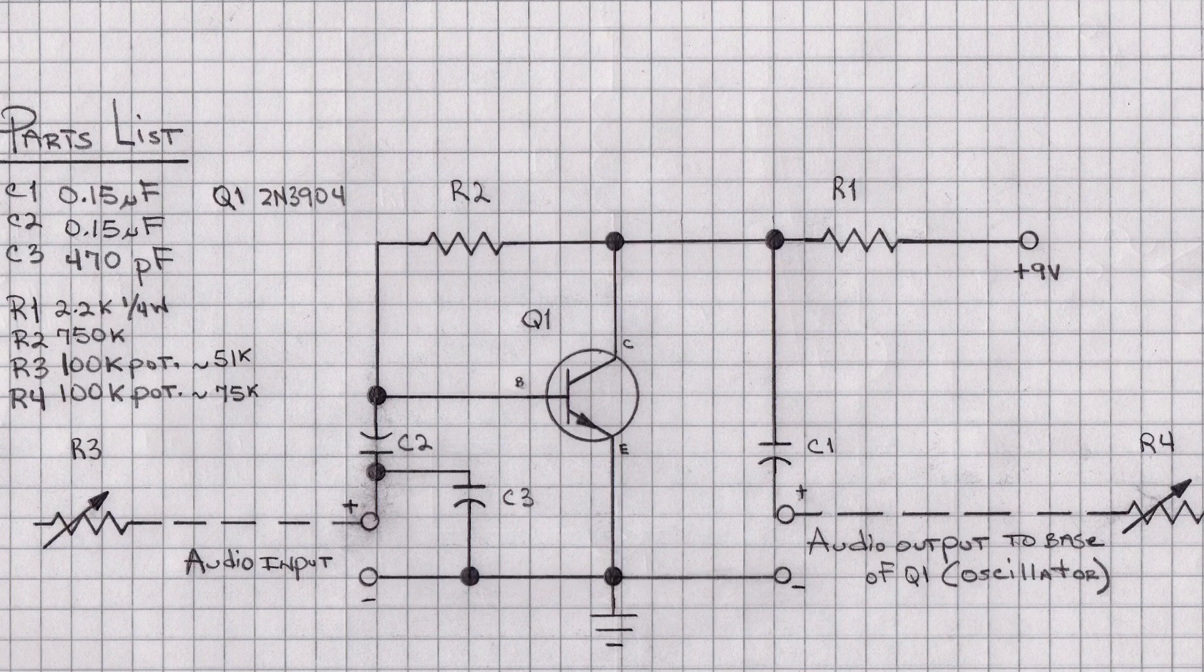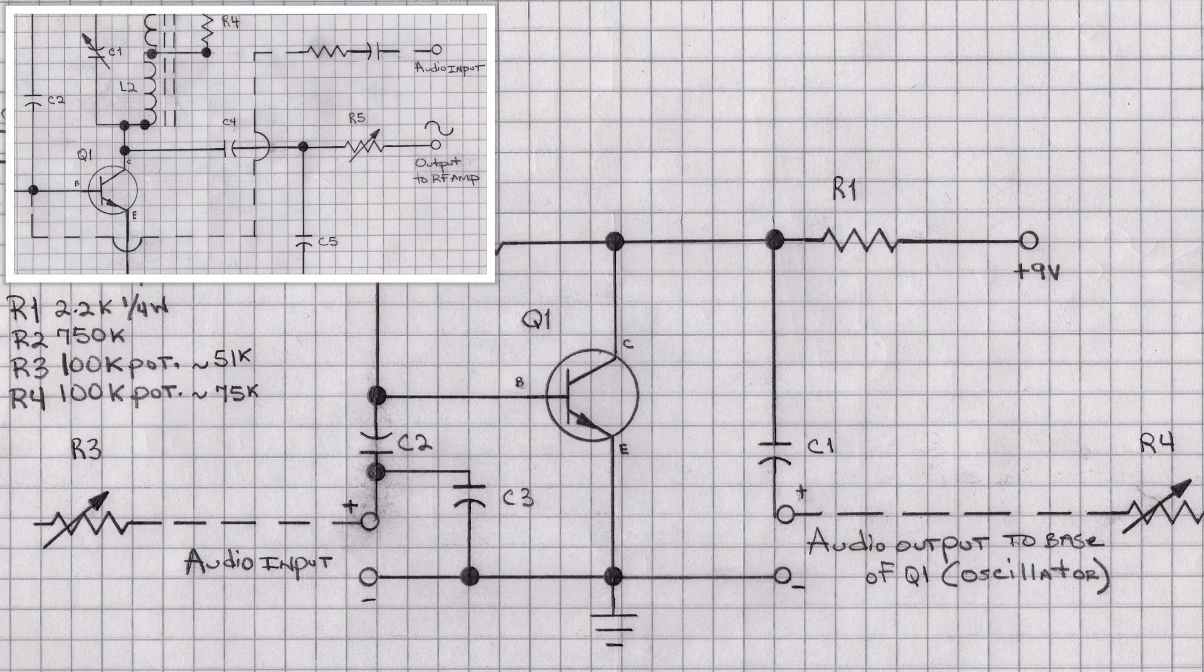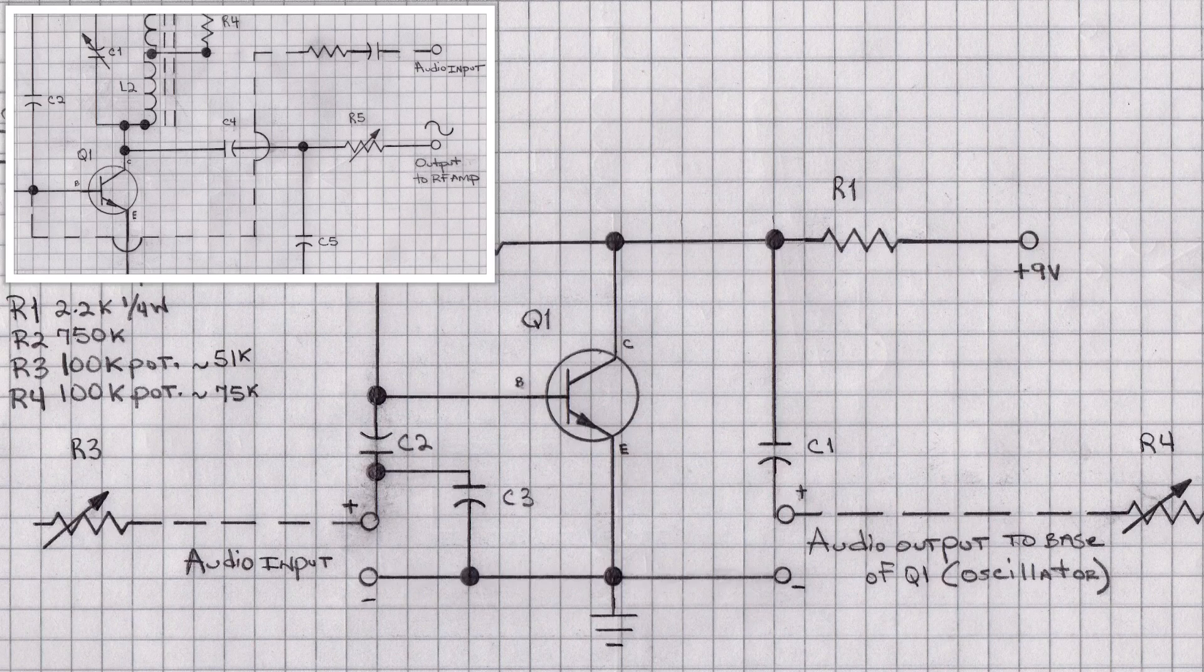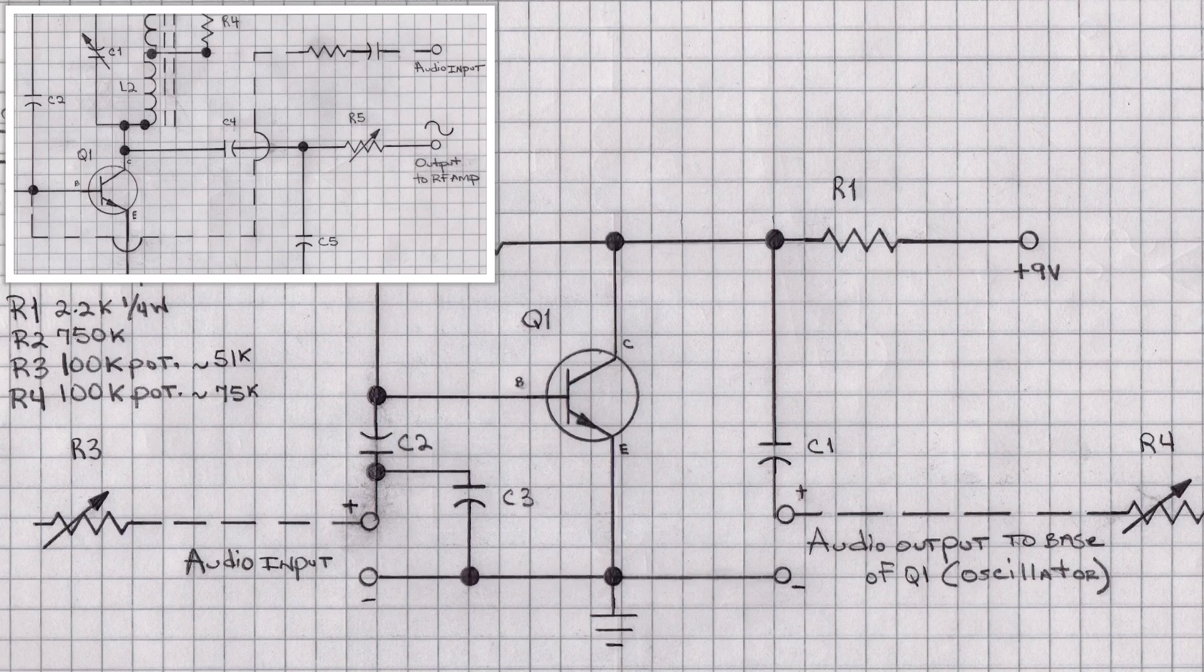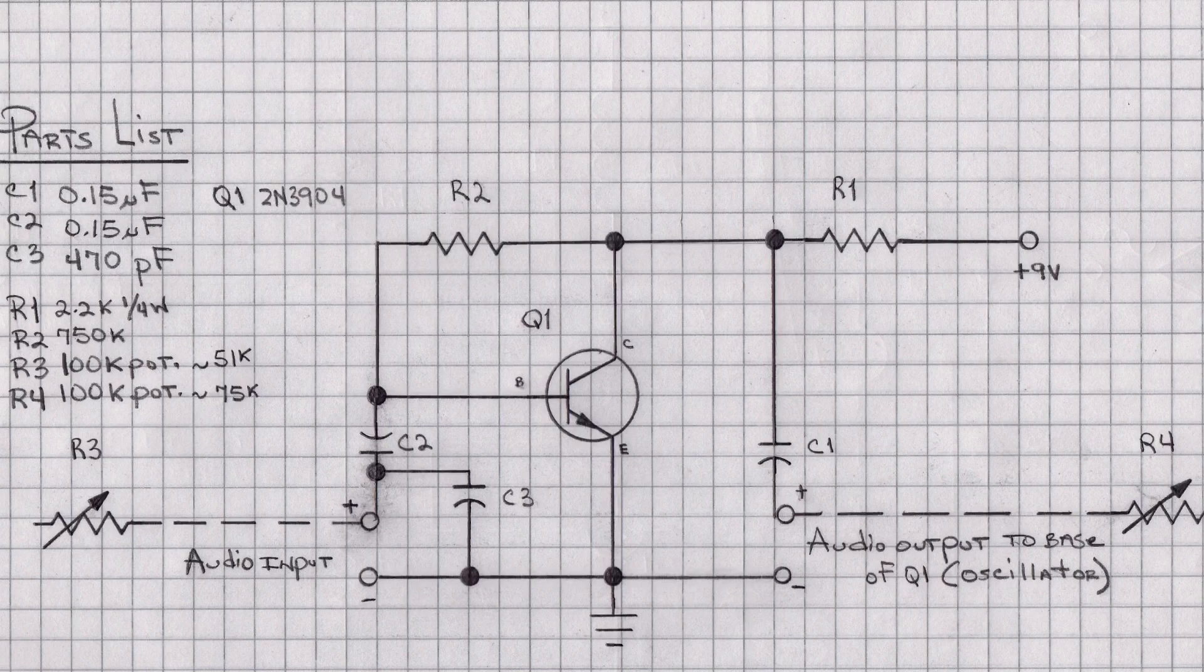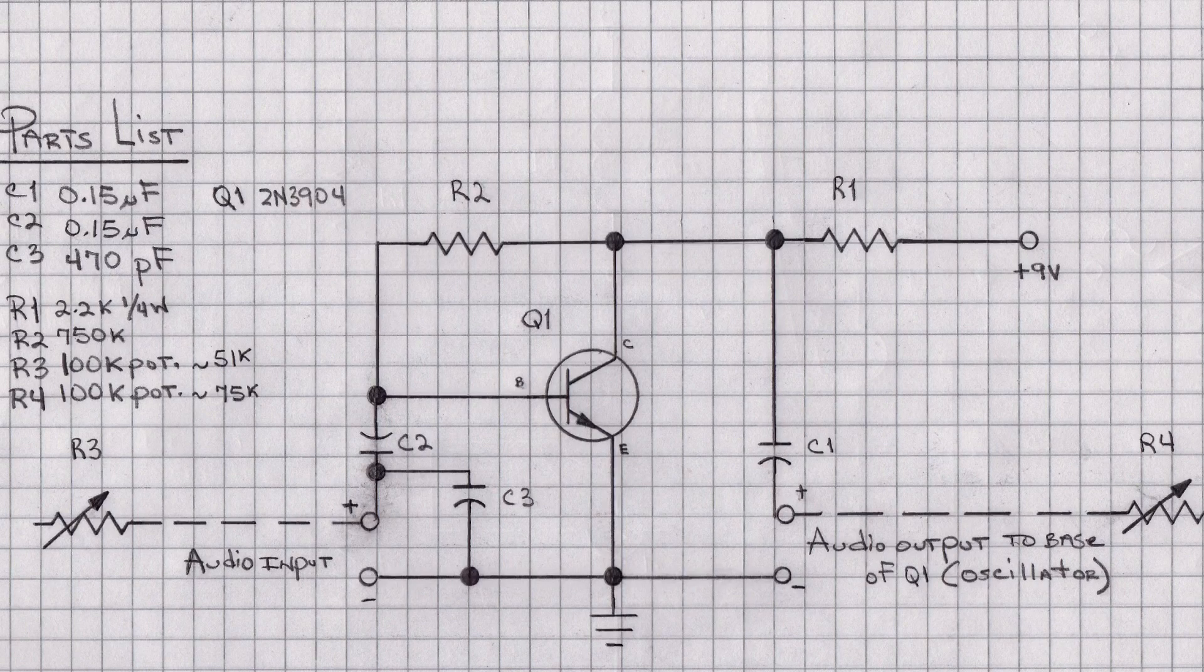And as I noted earlier, you'll see the output of this particular part of the circuit feeds back over to the base of Q1 or the 2N3904 used in the oscillator section itself.